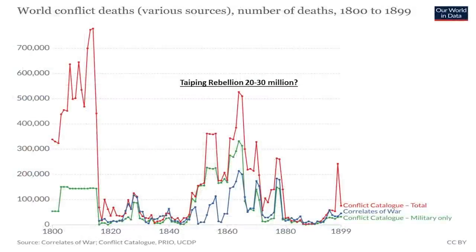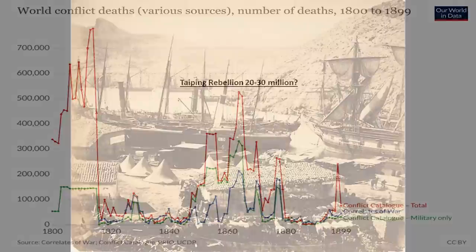We also look at the casualties from 1800 to 1899. In the early 19th century the Napoleonic Wars supposedly produced the most casualties, but are they even counting any of the casualties that occurred in China? 20 to 30 million would take you well off this chart. Ascertaining the number of casualties is always very difficult, and whenever you look up a single conflict like the United States Civil War, depending on the day and the source, you'll get a vast disparity in the number of casualties reported.